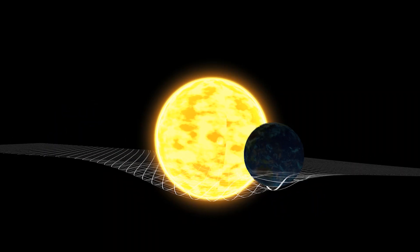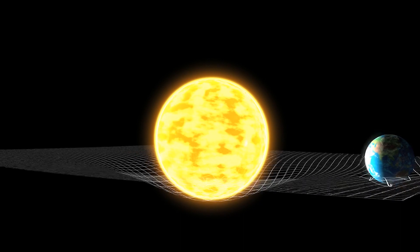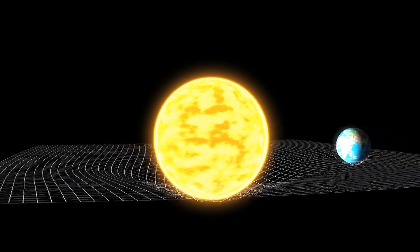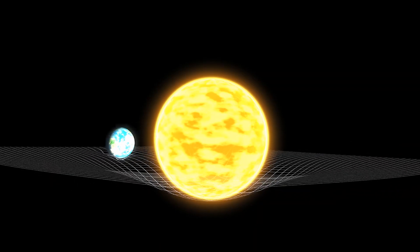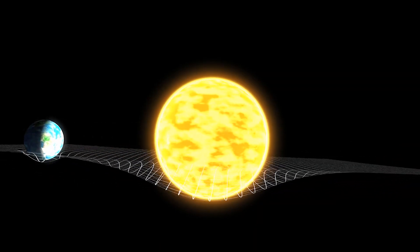Our Sun curves space-time. So the planets orbiting around are not being pulled by the Sun. They are just following the curved space-time deformation caused by the Sun.